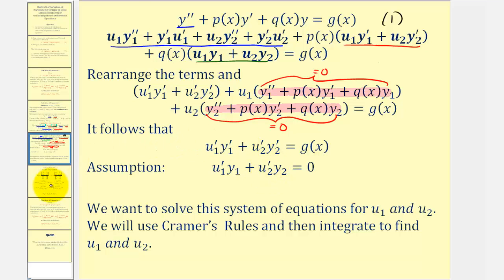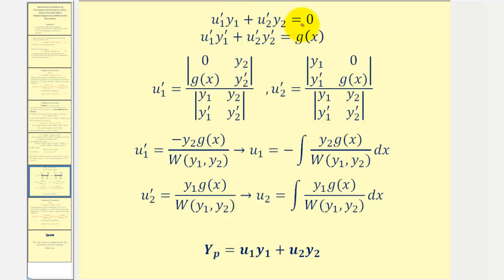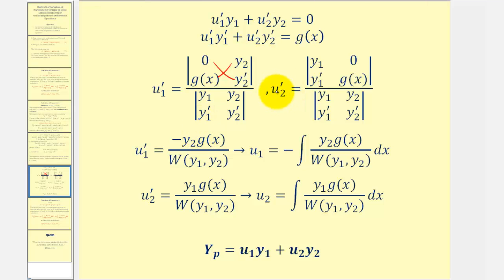Setting this up using Cramer's rule, equation one is the assumption and equation two is the equation we derived. The two-by-two determinants in the denominator turn out to be the Wronskian of y₁ and y₂. For u₁ prime, the numerator determinant gives zero minus y₂ times g of x. For u₂ prime, the numerator gives y₁ times g of x minus zero, as shown here.